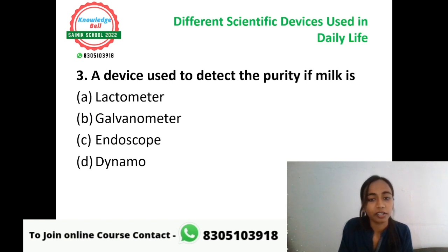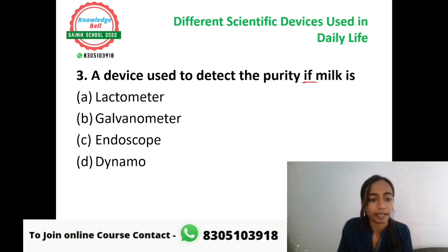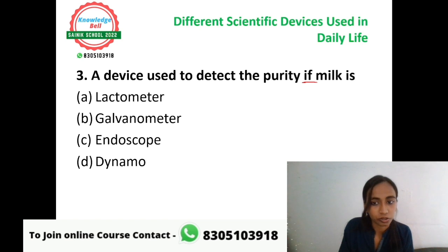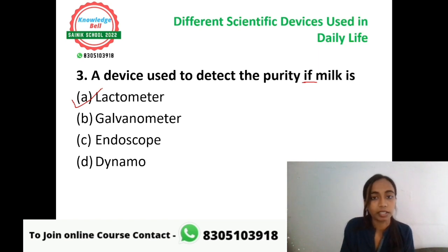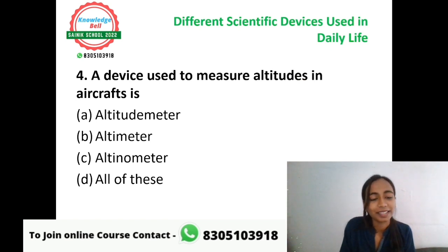The next question: the device used to detect the purity of milk — A: lactometer, B: galvanometer, C: endoscope, or D: dynamo. The correct answer is option A, lactometer. Lactometer is the device used to detect the purity of milk — whether the milk purchased is pure or not, and if pure, to what percentage it is pure and how much adulteration is present.